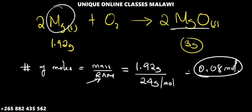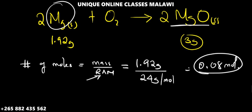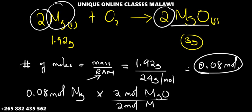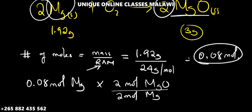Next, we need to convert this number of moles of magnesium to the number of moles of magnesium oxide using the mole ratio. The ratio is 2 moles of magnesium to 2 moles of magnesium oxide. So we have 0.08 moles of magnesium.